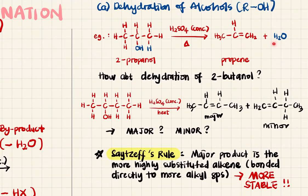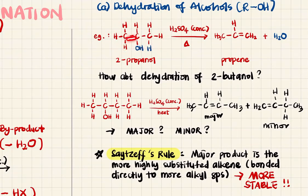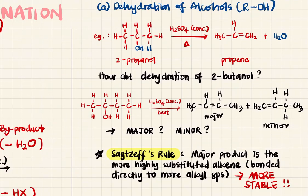The byproduct is water. In this case, even if you remove a different hydrogen, you still get a propene molecule because this alcohol has the same primary hydrogen next to it. Now, if we dehydrate 2-butanol, the OH is here, which means we can either remove the hydrogen from this carbon or the hydrogen from the adjacent carbon.